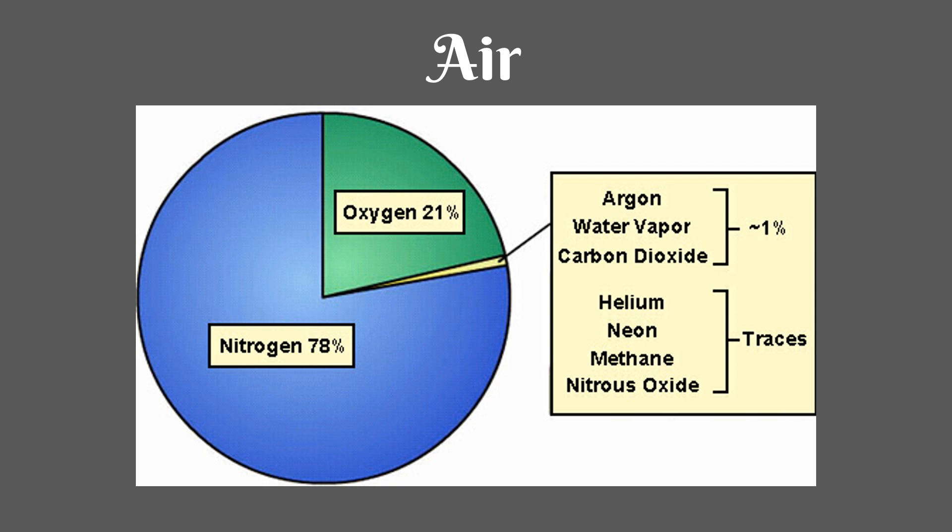Air is another abiotic factor. It forms the atmosphere around Earth. 78% of air is nitrogen, 21% of air is oxygen, and 1% is a mixture of everything else, including carbon dioxide.